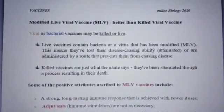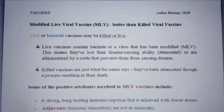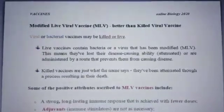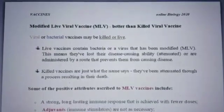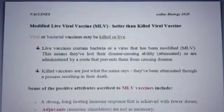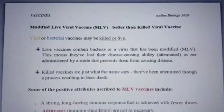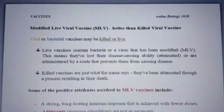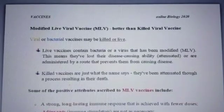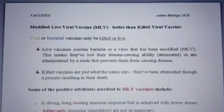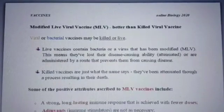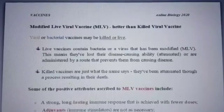Live vaccines are made by culturing bacterial or viral particles in a way that results in losing their virulence. Vaccines containing bacteria or viruses in a live form are called MLVs — modified live vaccines — because these particles have been modified through culturing in a specific media, resulting in attenuation of their disease-causing ability, and are administered by a route that prevents them from causing disease.